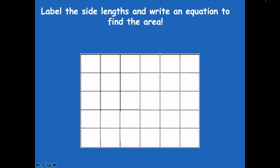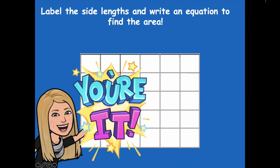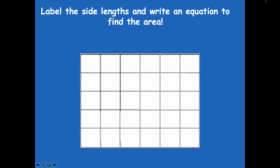All right, so label the side lengths and write an equation to find the area. So use your array, label the side lengths, and come up with a multiplication sentence to find the area. Click pause and then click play when you're ready to go over it together. All right friends, here we go. Make sure you pause if you need more time.